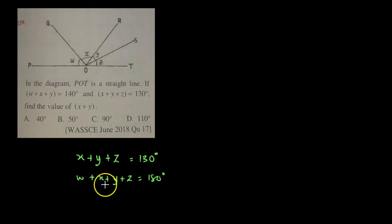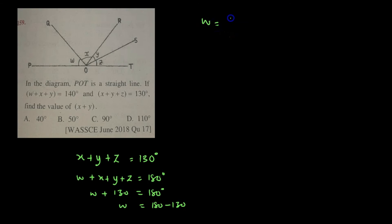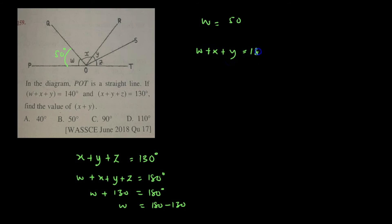From this, we can solve for W. We know X plus Y plus Z is 130, so we substitute 130 degrees in place of X plus Y plus Z. Therefore W plus 130 degrees equals 180 degrees, so W equals 180 minus 130 degrees, giving W an answer of 50 degrees. Now that we know W is 50 degrees, from the preamble we are told that W plus X plus Y equals 140 degrees, so we substitute 50 in place of W.